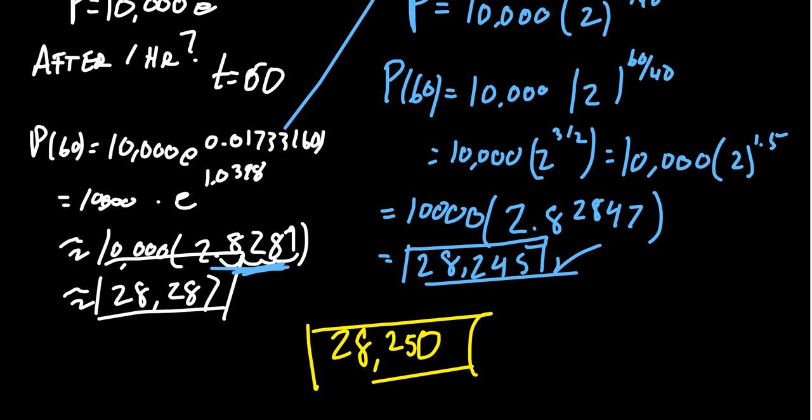We'll say that's a pretty good estimate. Somewhere in that ballpark, 28,300, 28,200. We're only off by a couple tens of bacteria. That's not going to be a huge error.